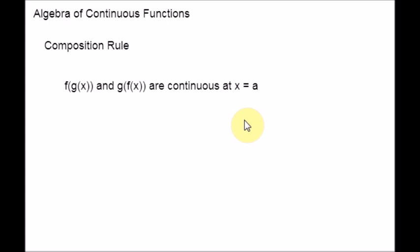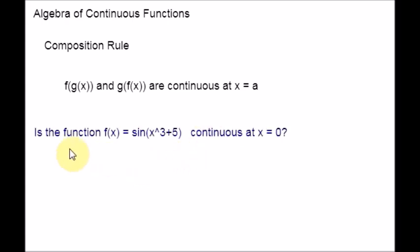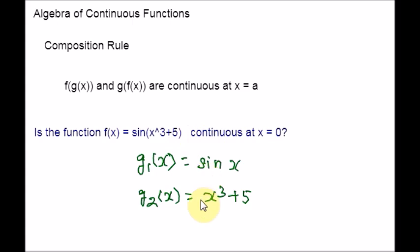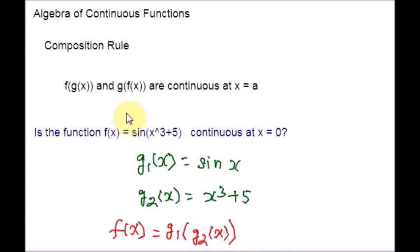Here is the next example: is the function f(x) equal to sin(x³ + 5) continuous at x equal to 0? Without going into the trouble of checking all conditions of continuity individually, one can see that this function is formed by the composition of two continuous functions — the outside function is sine and the inside function is x³ plus 5. So g1(x) equals sin(x) and g2(x) equals x³ plus 5. We can rewrite f(x) as g1(g2(x)). Thus by the composition rule, f(x) is continuous at x equal to 0.